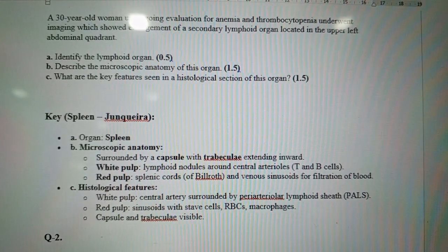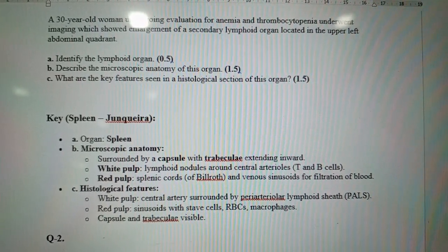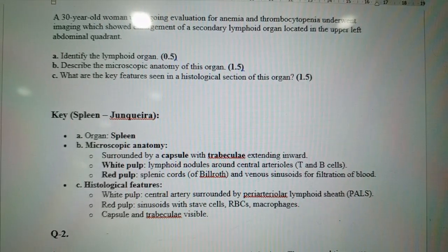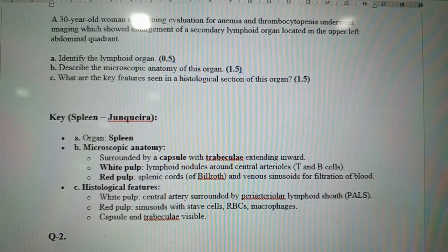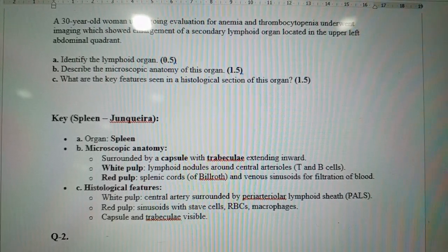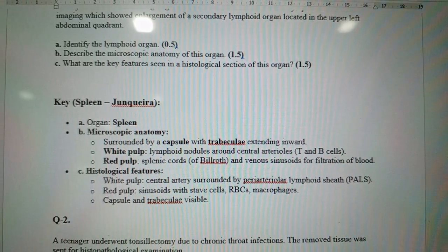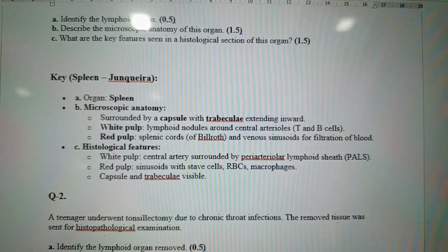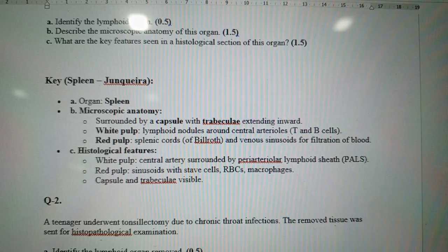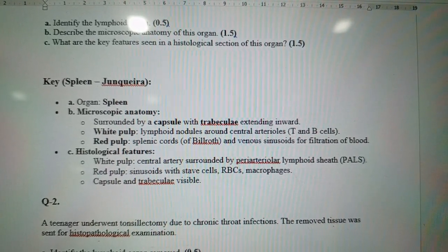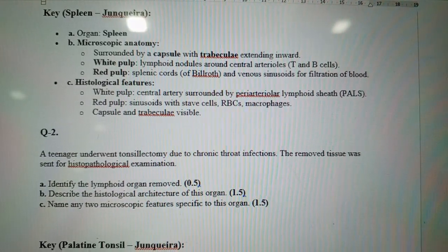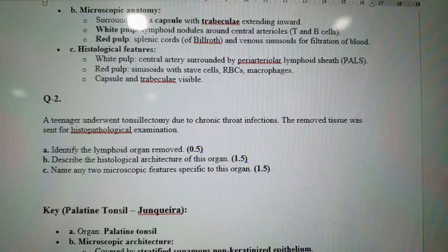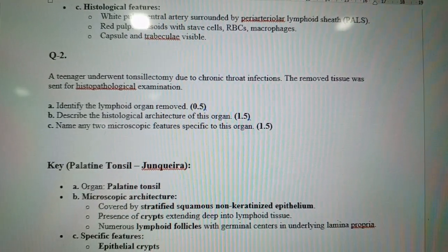White pulp consists of lymphoid nodules around central arterioles, containing T and B cells. Red pulp consists of splenic cords — also called cords of Billroth — and splenic sinusoids. Histological features include sinusoids with stave cells, RBCs, and macrophages. The white pulp contains a central artery surrounded by PALS (periarteriolar lymphoid sheath). Capsule and trabeculae can also be seen. Draw the diagram from the DeFore Atlas if asked.